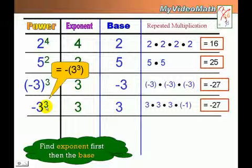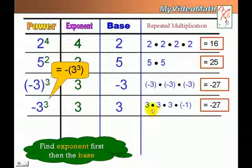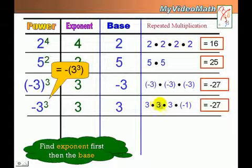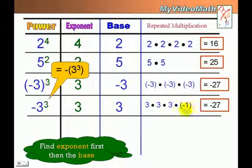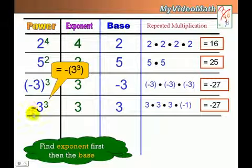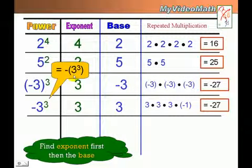This next one looks very similar, but the exponent is 3 and the base is not negative 3 — it is just 3. So if we represent that in factor form, it is 3 times 3 times 3, then times negative 1, because of the negative sign outside.